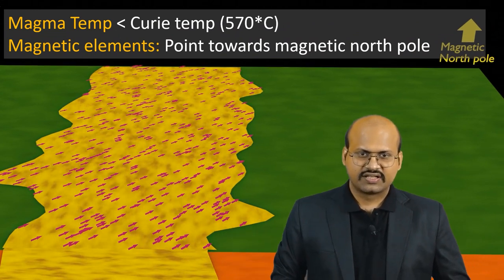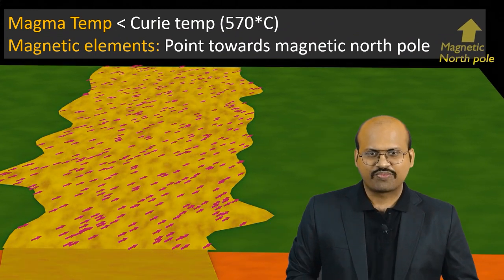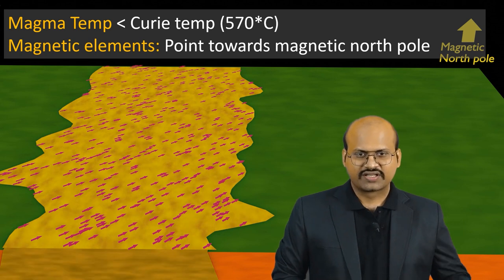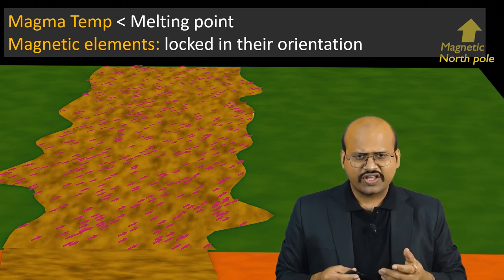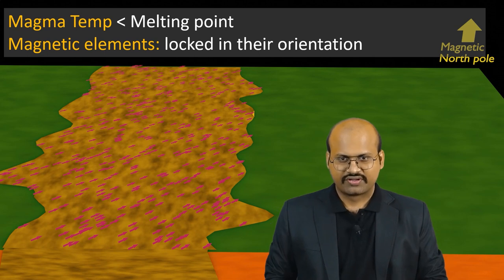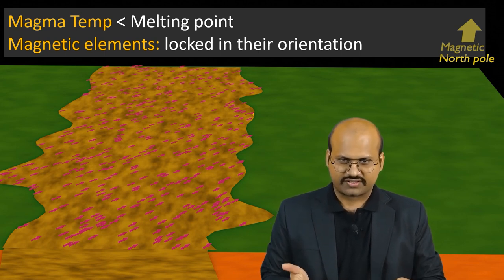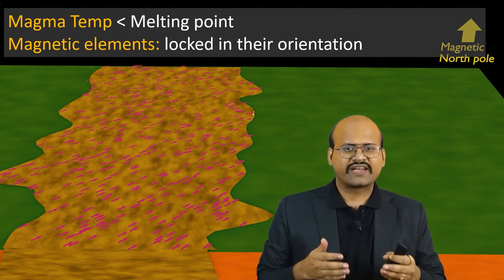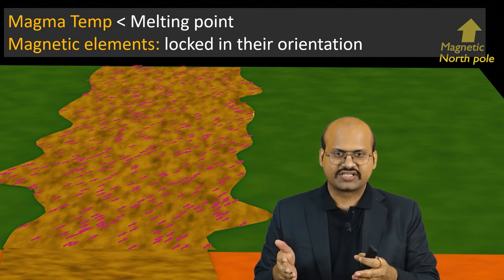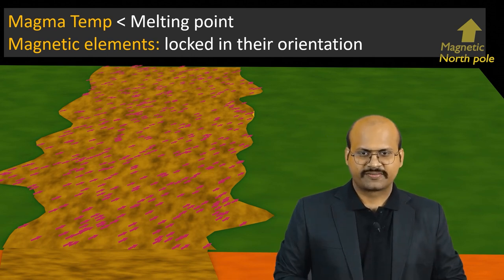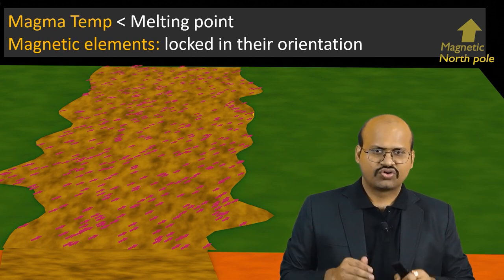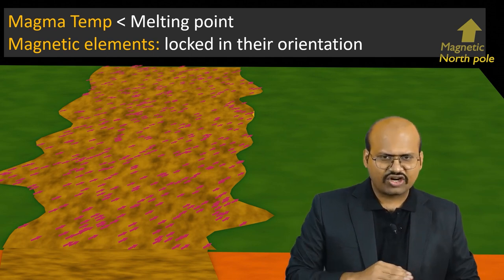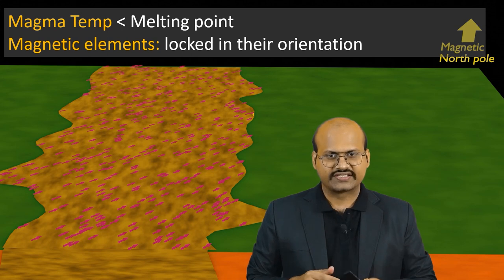When the magma further cools down and solidifies to form rocks, the magnetic elements are locked in their position in the solidified rock. That is, the magnetic elements will continue to hold their position and cannot change their direction of orientation. Even if the north pole moves, the magnetic elements within rocks will continue to point in the direction they were pointing when they were formed. Similarly, if the land block is moved due to tectonic activities, the magnetic elements in the rocks will still keep their orientation.